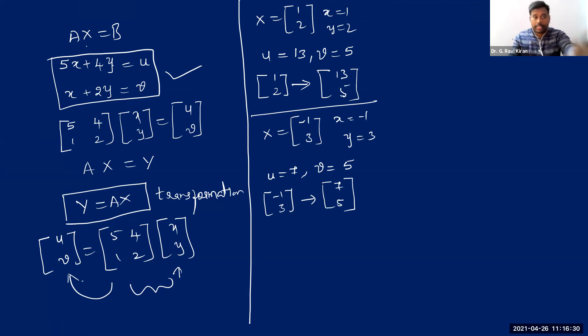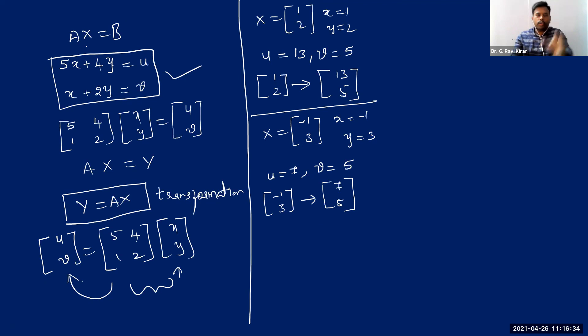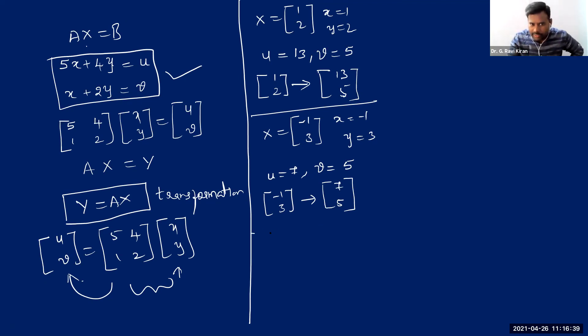This is the transformation because it is transforming one vector into a new vector. Let me take a few other examples and see what happens.